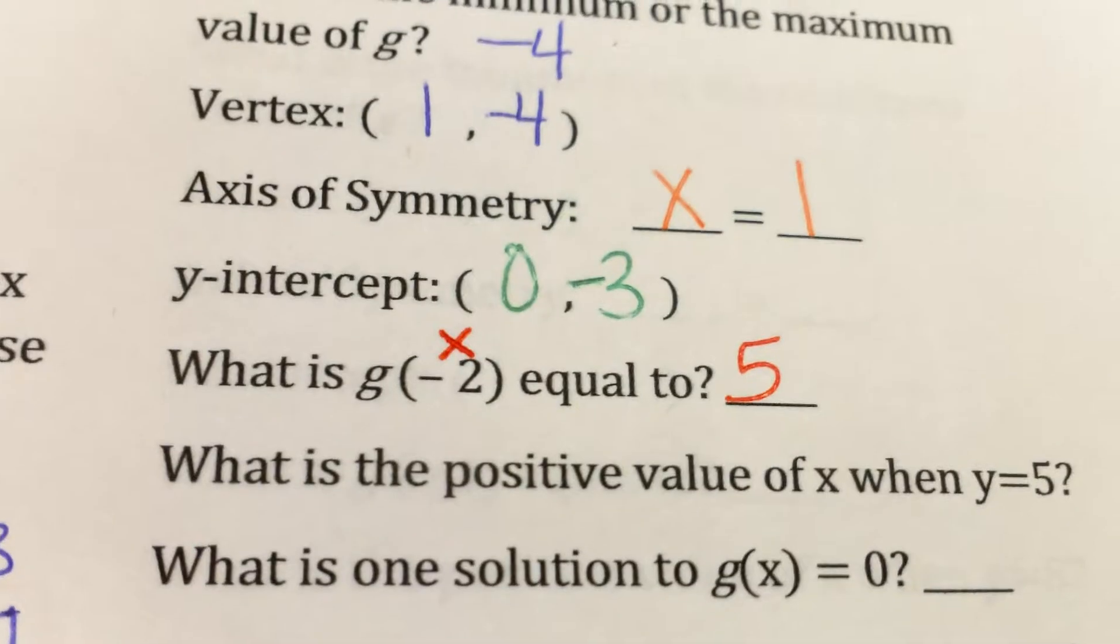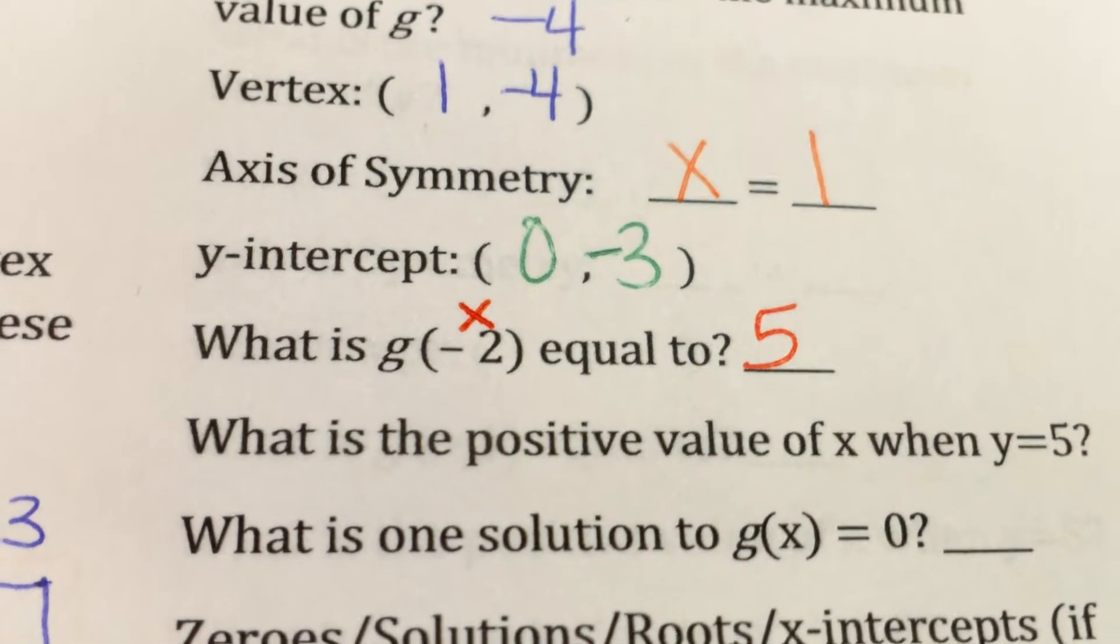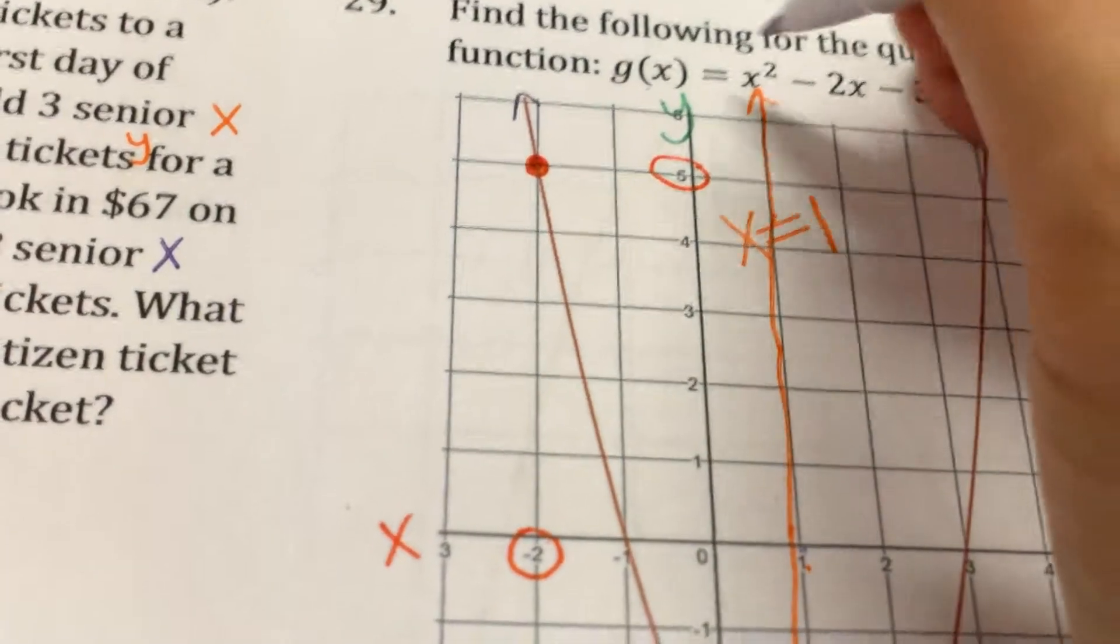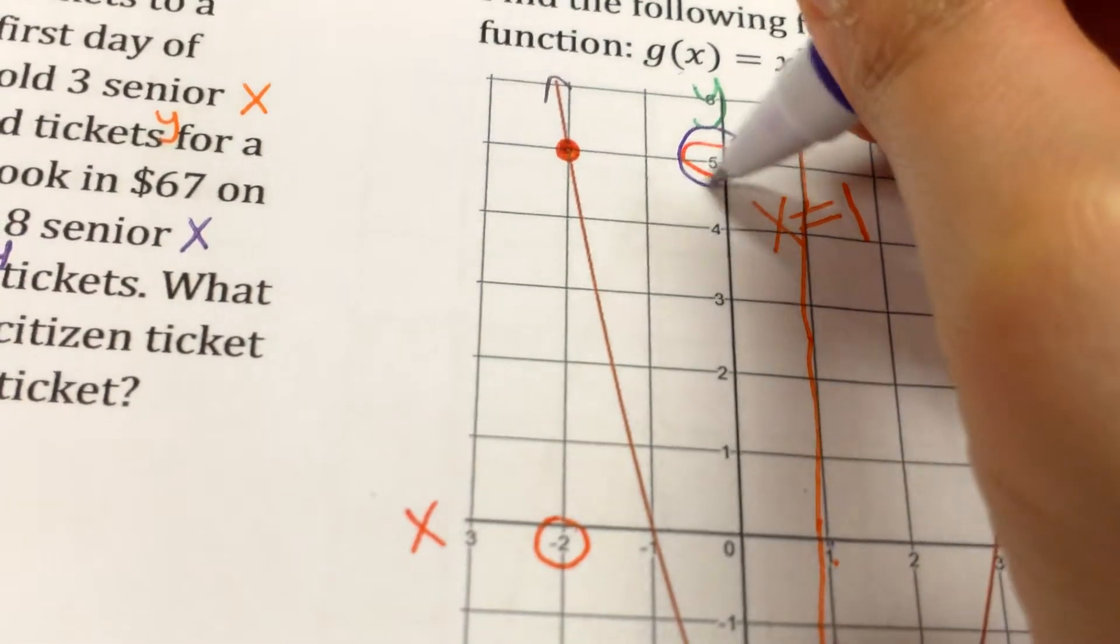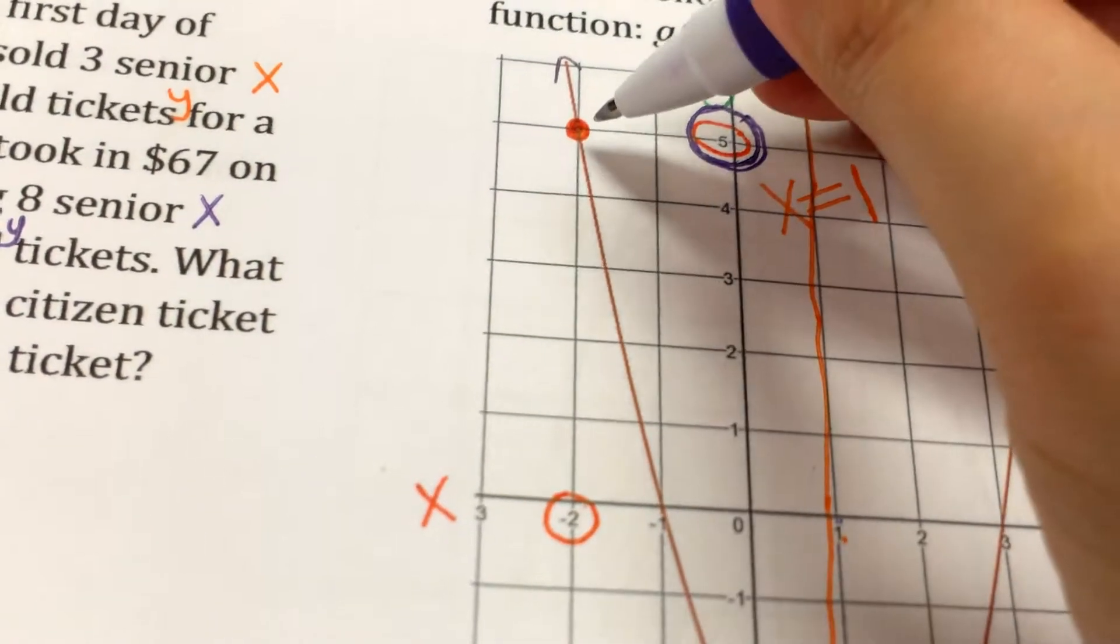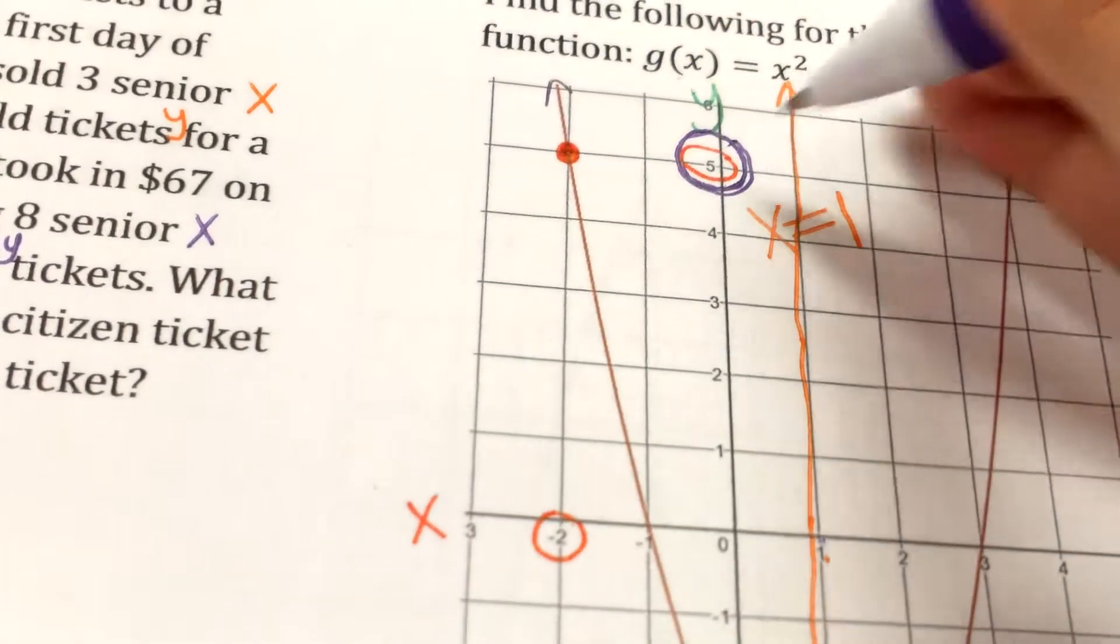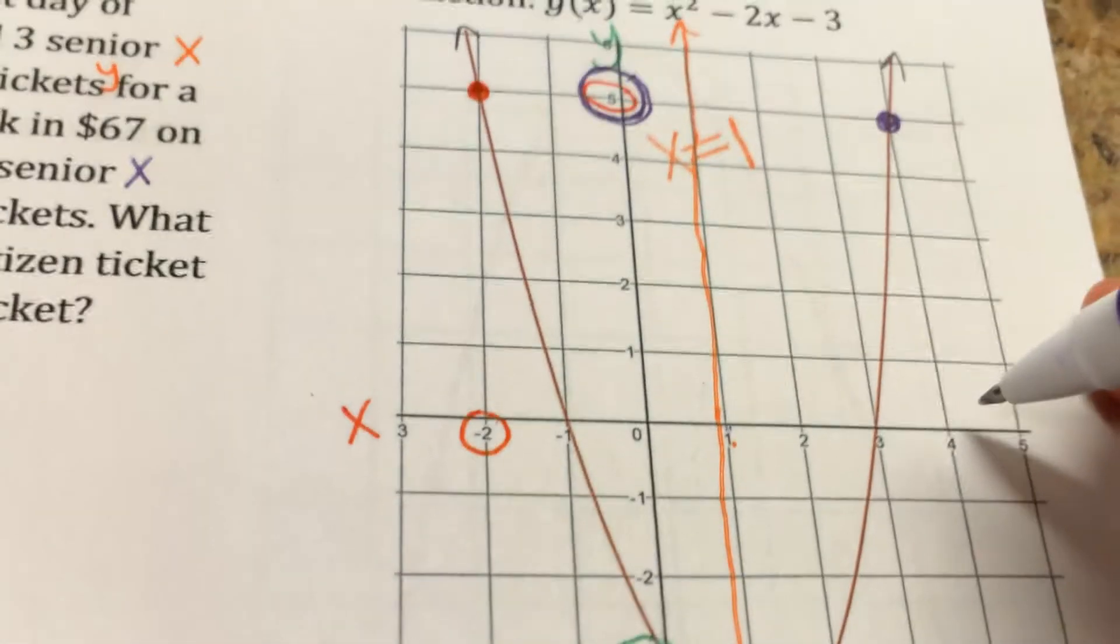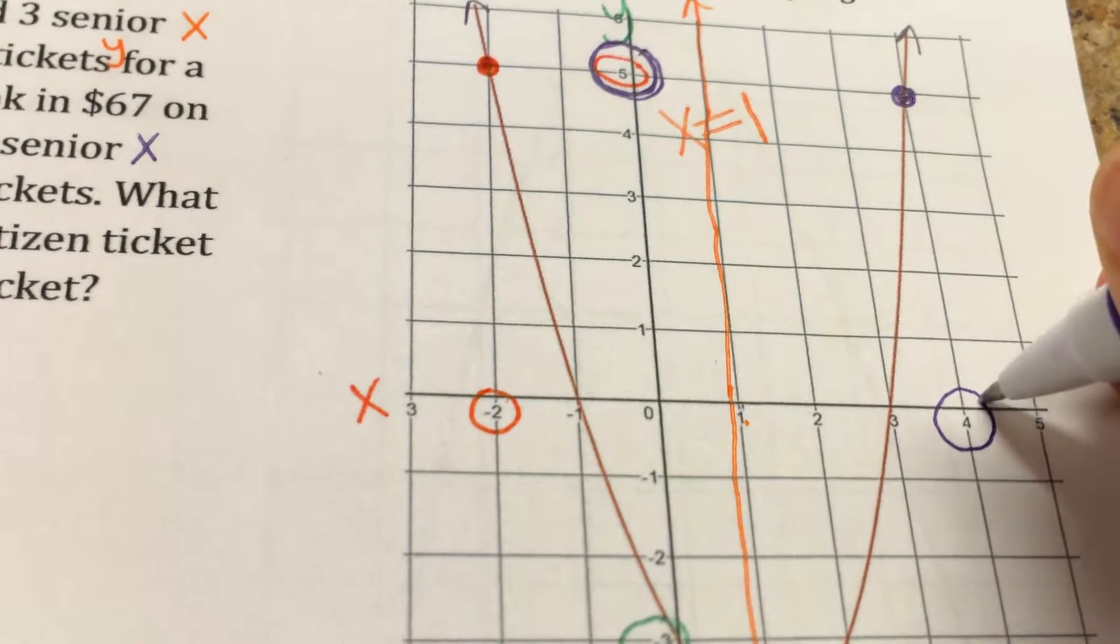What is the positive value of x when y equals 5? So we go to the y being 5, y equals 5, which is right here, which we already circled. Y equals 5. They want the positive x value. Here I have a negative 2. Here would be the positive x value, which is 4.